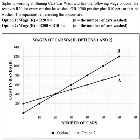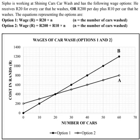Looking at the graph, one graph begins at zero while the other begins at 200. The one that begins at zero — that's line B — is option 1, meaning if Sipo does not wash any car, he won't get a salary that day. Graph A begins at 200 because he gets a fixed amount of 200 rand before washing any car, whether he washes or not.